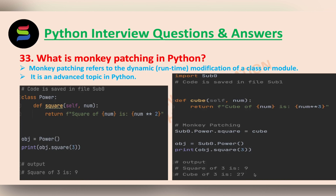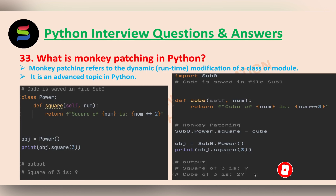That is what you can see here: import sub0. Then we have created a function called cube, which returns the cube of the input number. Here we are doing the monkey patching. We have created the previously defined class object and printing it, seeing the output — square of 3 is 9 and cube of 3 is 27.